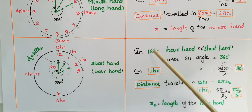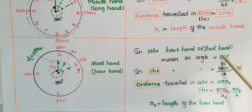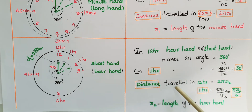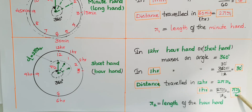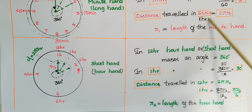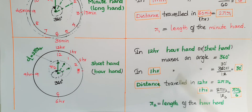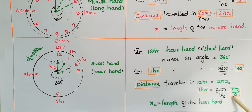In 12 hours the hour hand (short hand) makes an angle of 360 degrees, so in one hour it makes an angle of 30 degrees. The distance traveled in 12 hours by the hour hand is 2πr2, and in one hour the distance traveled by the hour hand is πr2/6, where r2 is the length of the hour hand. So the distance traveled by the minute hand in one hour is 2πr1 and by the hour hand in one hour is πr2/6.